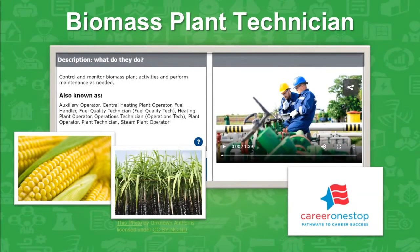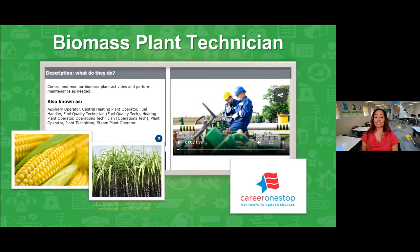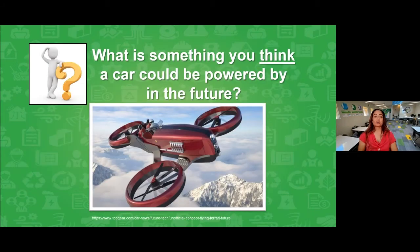Corn is a huge biomass crop, and biomass plant technicians are in charge of monitoring and operating machinery to produce renewable energy. They also inspect equipment, test its chemistry, and perform repairs. Like them, we are going to be monitoring our lava lamp production today because we're going to be using a biofuel — corn oil. Now here's a question: what is something you think a car could be powered by in the future? Use your imagination and tell us your ideas in the chat.